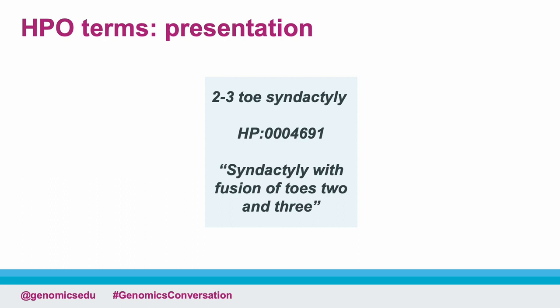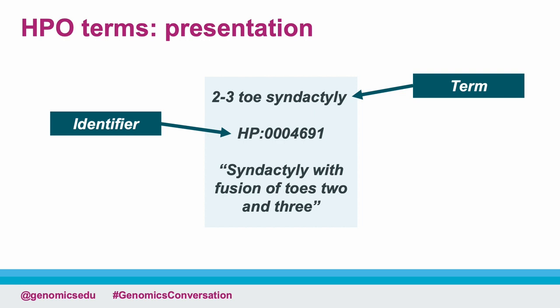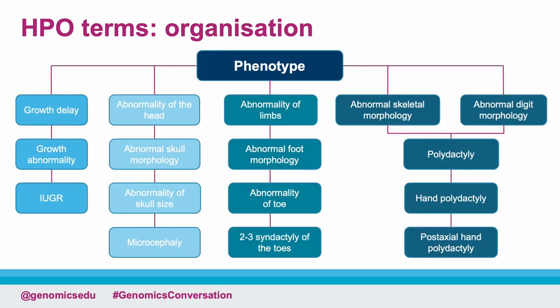While we're looking at this example, let's break down the way in which HPO terms are presented. The term itself, '2-3 toe syndactyly', is the common language agreed for this phenotype. The identifier is a unique number that relates to this specific term — all of these start with HP and are followed by a number. All terms in the database also have a description to help you select the right one. The terms are arranged in a hierarchy with broader terms known as parent terms, such as 'abnormality of the limbs', and more specific subterms known as child terms, such as '2-3 toe syndactyly'.